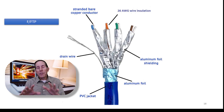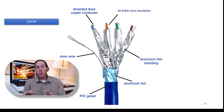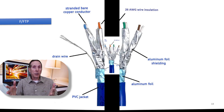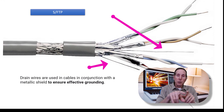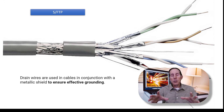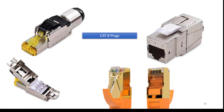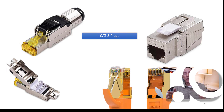You do have to have installers that understand shielded twisted pair to properly install your system. Notice that many of these shielded twisted pairs come with a drain wire — those are used so you can effectively get a signal ground. These are variations of CAT 8 jacks and plugs, and notice how they are even shielded.